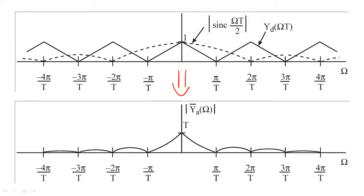To recreate y bar sub a of omega, we need to remove all frequency content beyond π/T, and we need to undo the scaling caused by the sinc function between negative π/T and π/T.